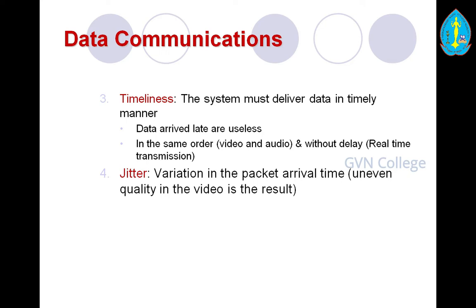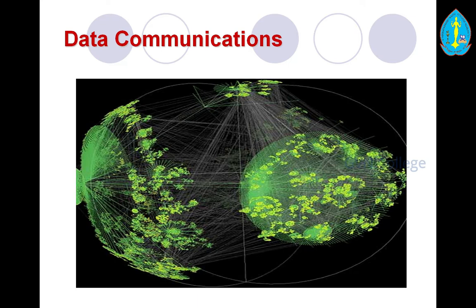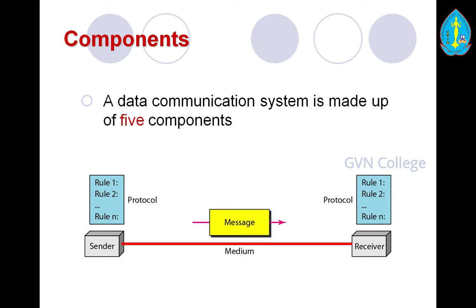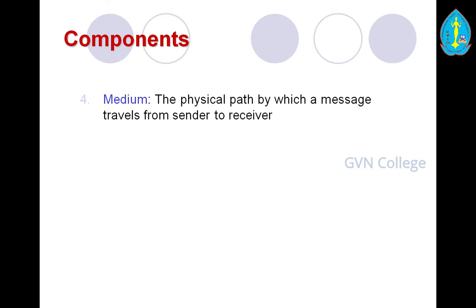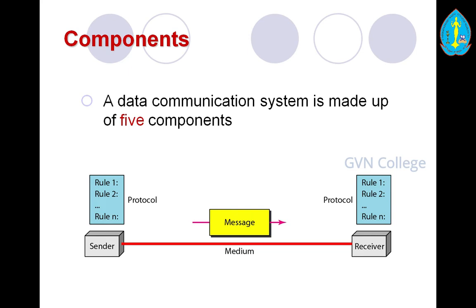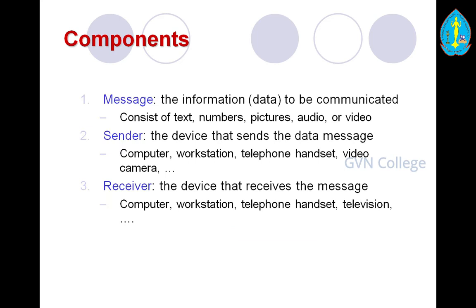Here are examples of how data communication is covered throughout the world. Next is the components of a data network. A data communication system is made up of five components. The five components are message, sender, receiver, medium, and protocol. The sender is the device that sends the data message to the receiver — it could be a computer, workstation, telephone handset, or video camera.